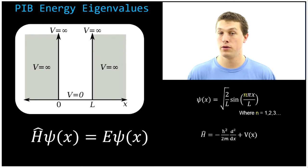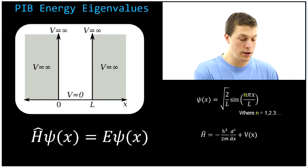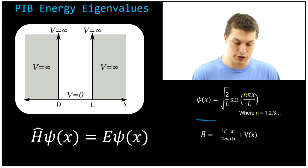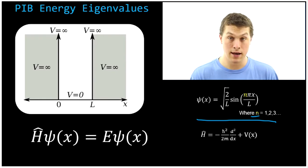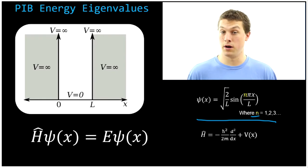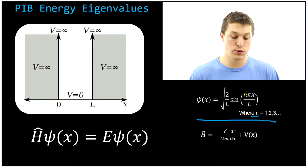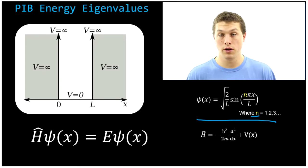If you did the particle-in-the-box derivation, you saw that you get a bunch of wavefunctions at the end. Those wavefunctions are indexed by this letter N, so you really got an unlimited number of solutions. We're going to figure out the energies of all of those solutions.